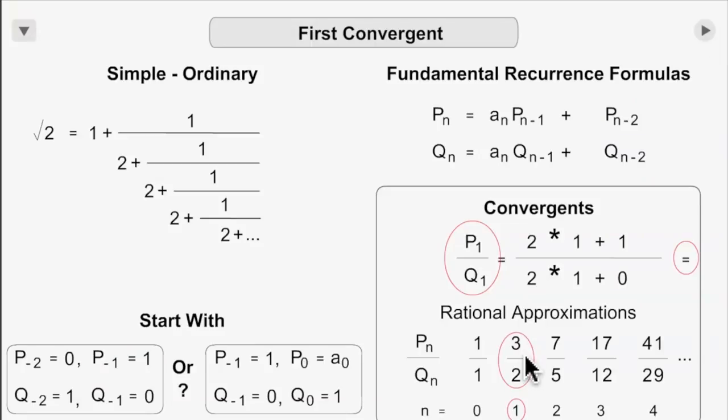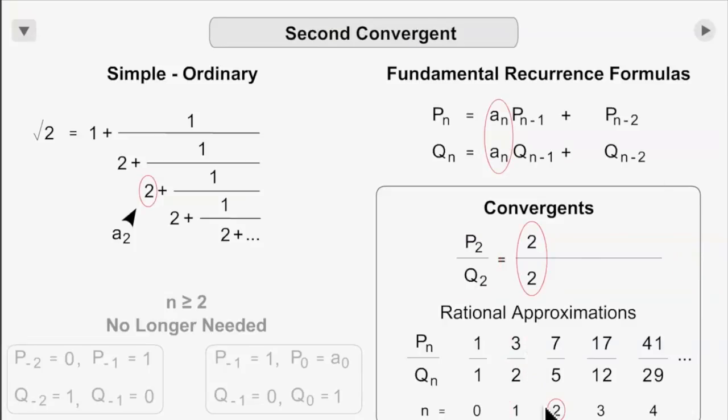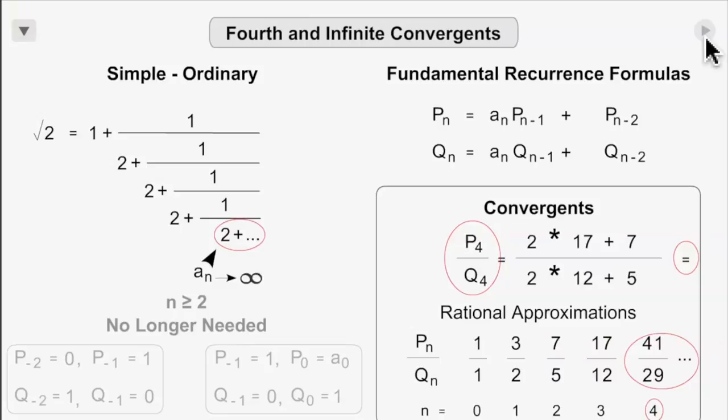And for n equals 1, you get 3 halves, for n equals 2, you get 7 fifths. And you can see the 7 fifths, 17 twelfths. But I will leave further development to those more interested than I am.